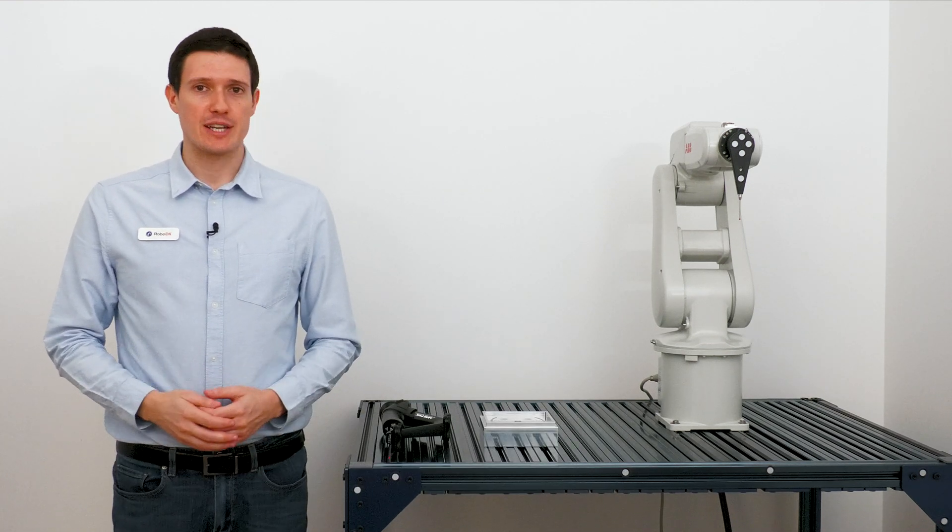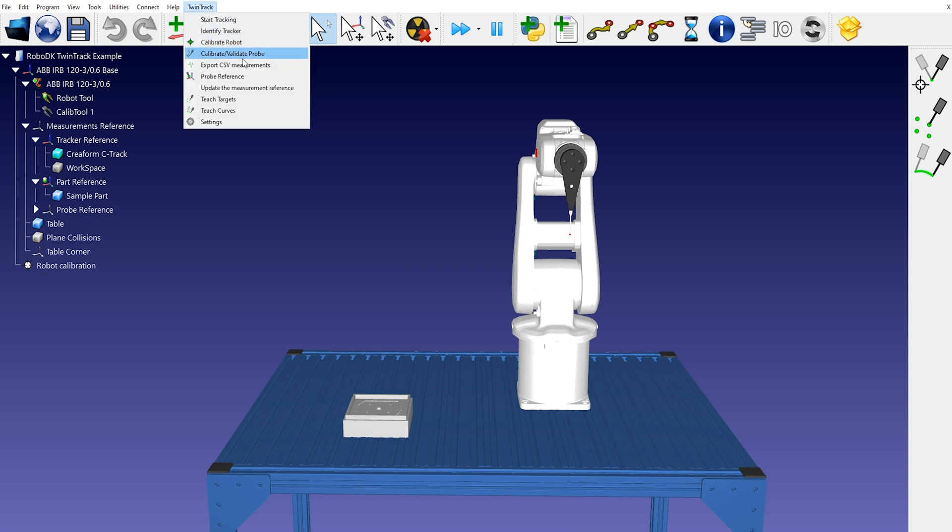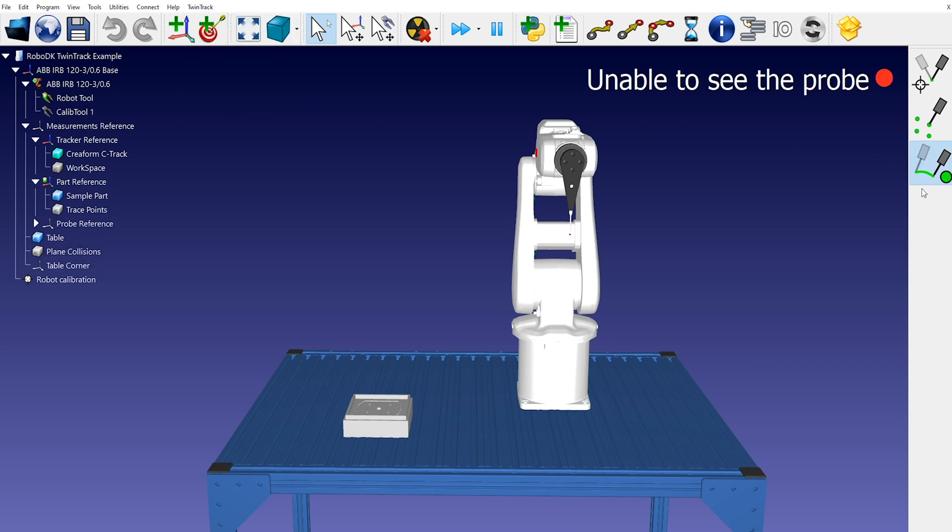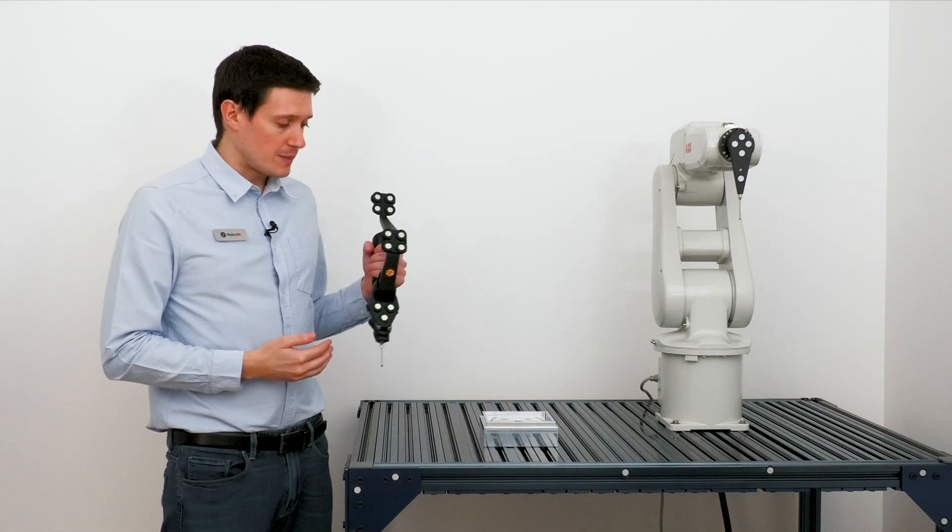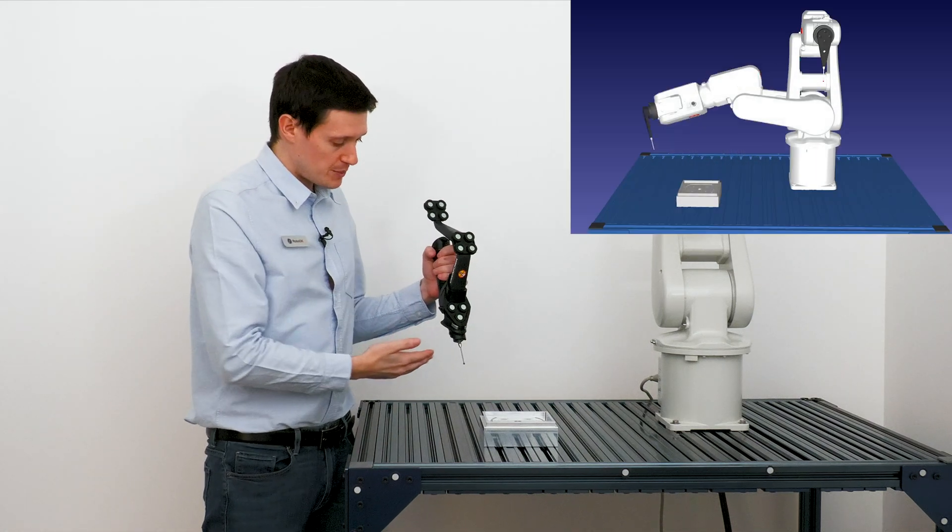In this video, I'll show you how you can create a path for your robot using RoboDK TwinTrack. With the TwinTrack app installed in RoboDK, simply select TwinTrack Teach Curve. You can also select the corresponding button in the toolbar. RoboDK tracks the position of your hand in real time and displays how the robot would reach the probe.